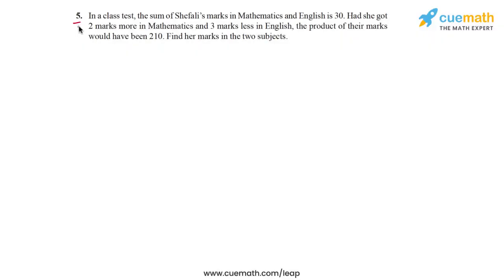In question 5 of this exercise, the problem statement says: in a class test, the sum of Shefali's marks in mathematics and English is 30. Had she got two marks more in mathematics and three marks less in English, the product of their marks would have been 210. Find her marks in the two subjects.